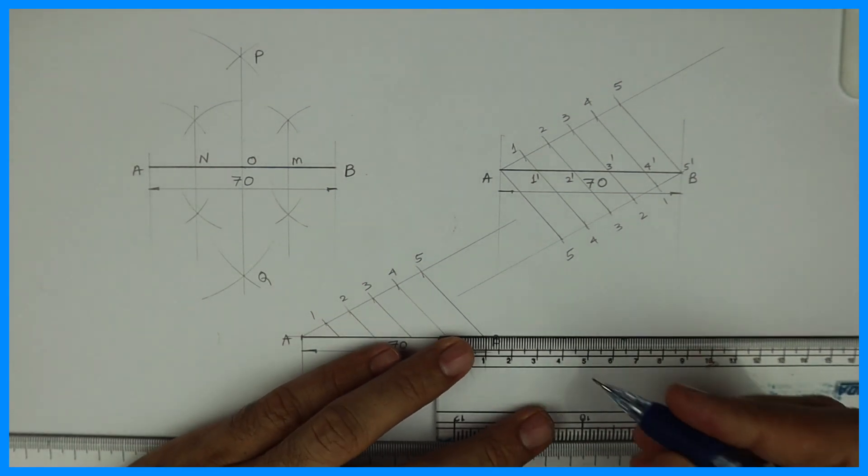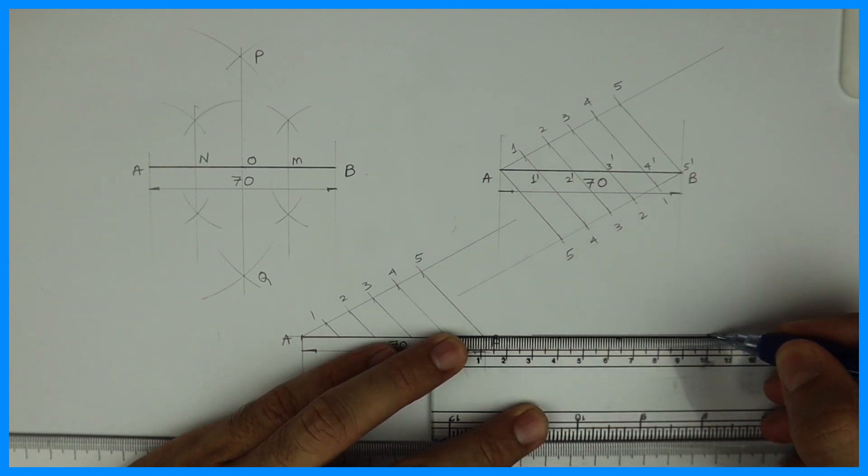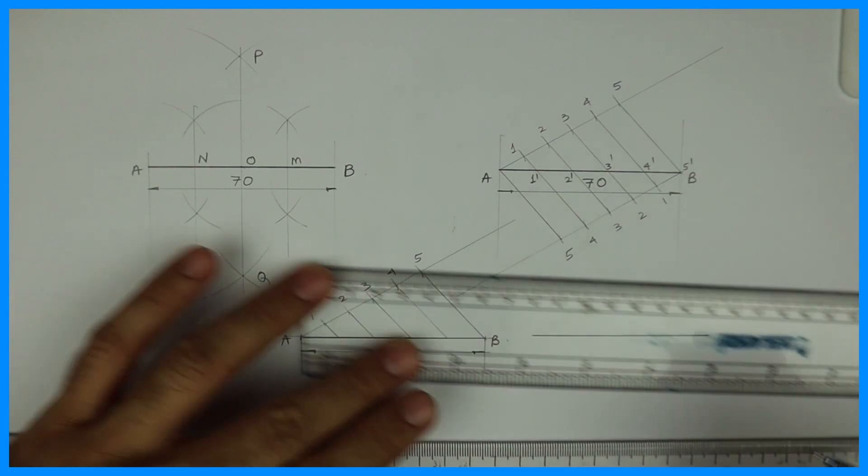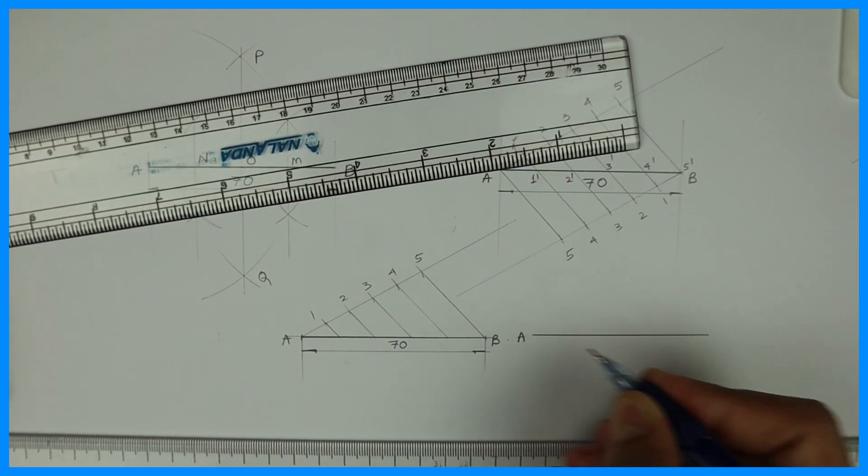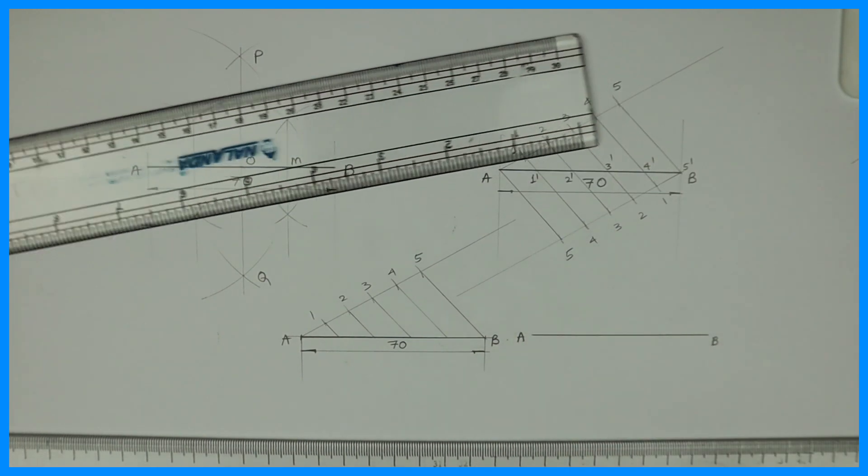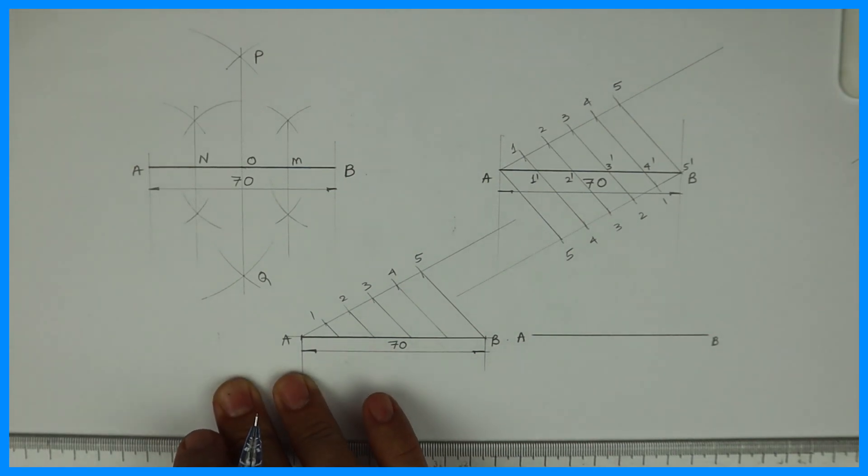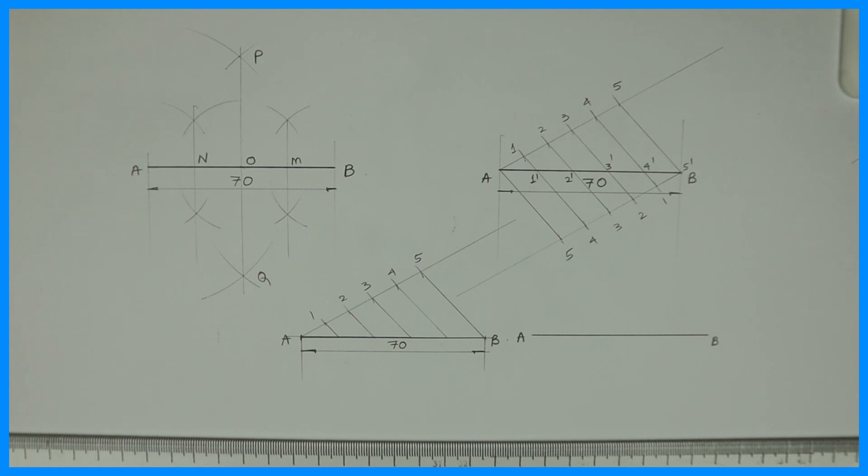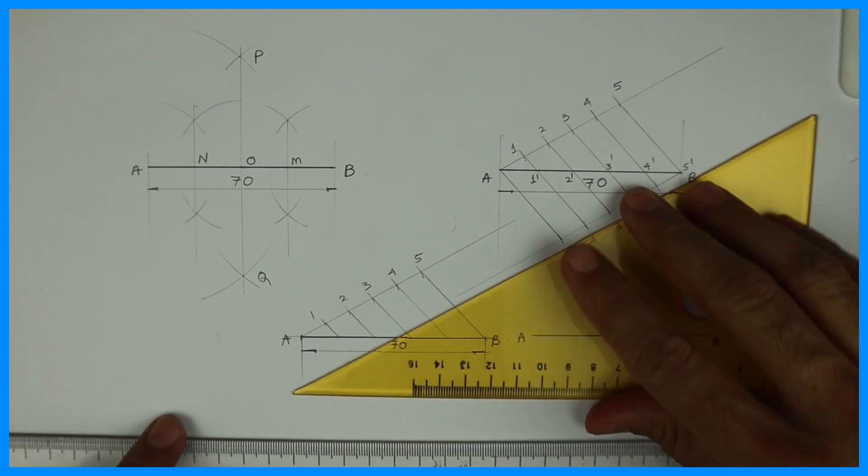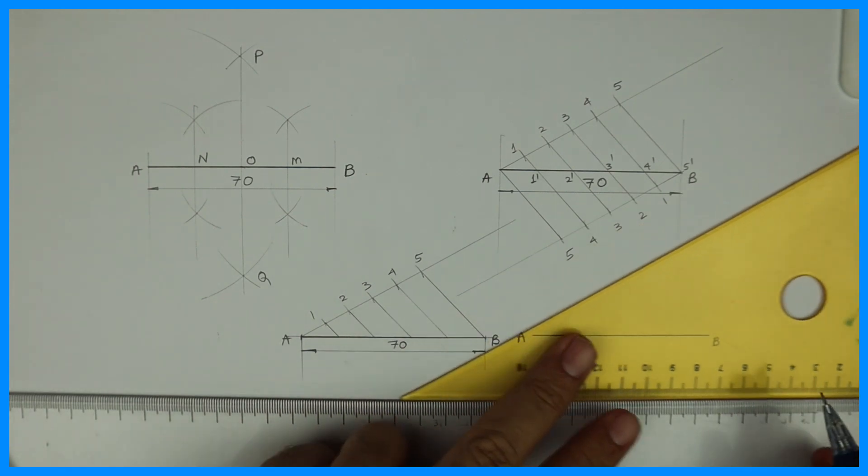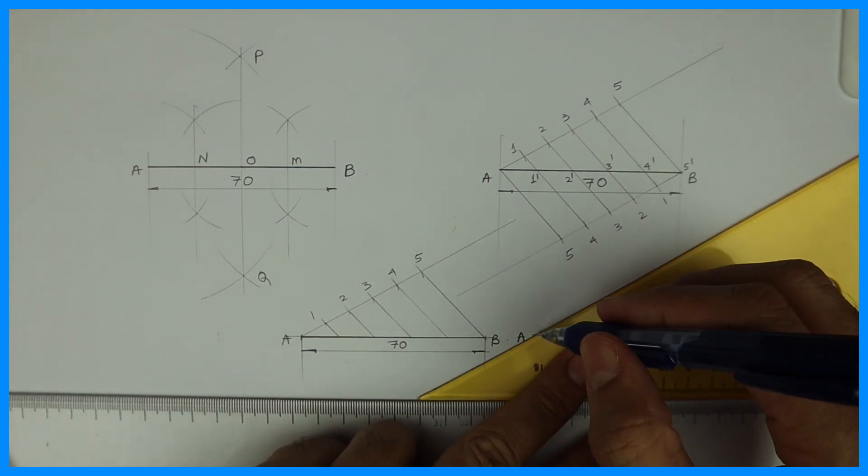Now we will do 7 parts with the same method. Again I will take line AB 70 mm long. See from A you take angle.